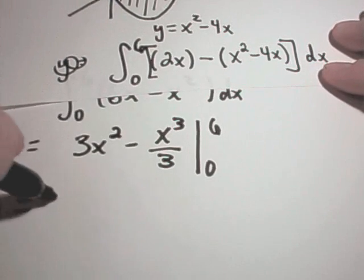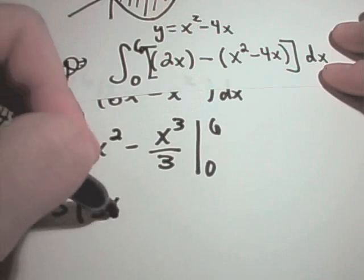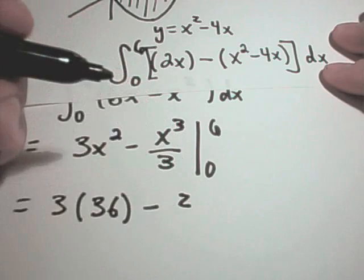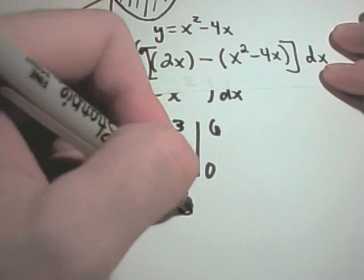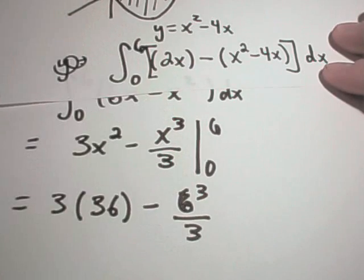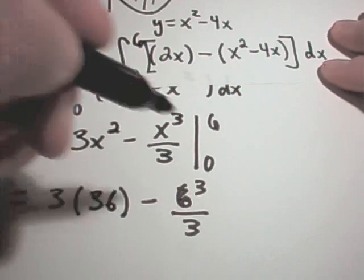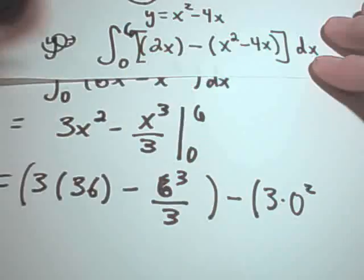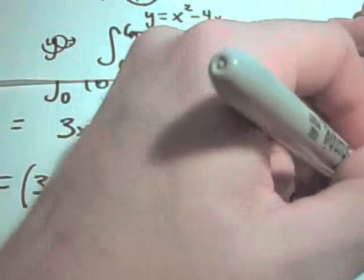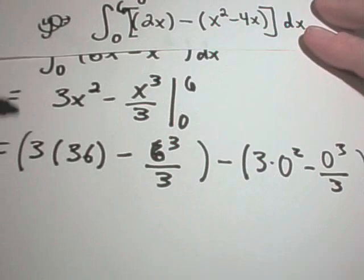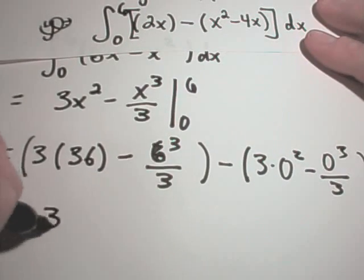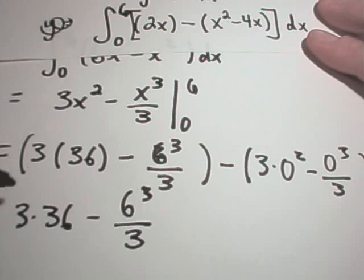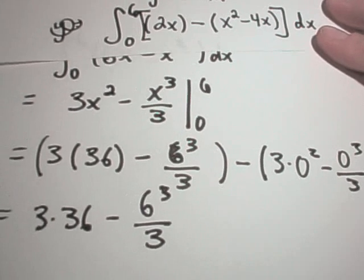And then we have to integrate this from 0 to 6. So I'll plug my upper limit in. I'll get 3 times 6 squared, which is 36, minus 6 cubed, which is... I forget. So let's just put in 6 cubed. And if you subtract away the lower limit of integration, when you plug zeros in, you'll simply get 3 times 0 squared minus 0 cubed over 3, which is all going to simply turn into 0. So you're left with basically 3 times 36 minus 6 cubed over 3. And this is now your final answer. And I'll leave that to you all to simplify.